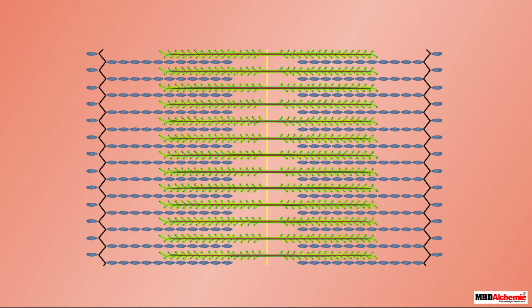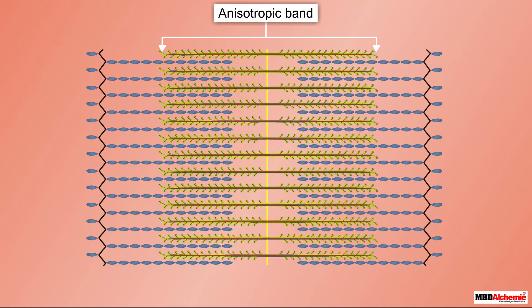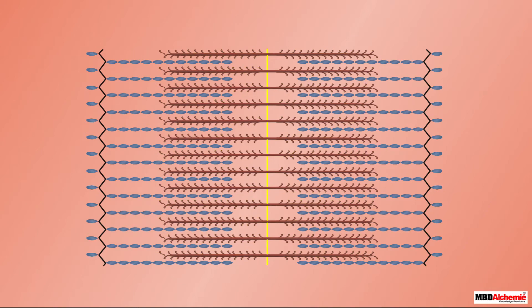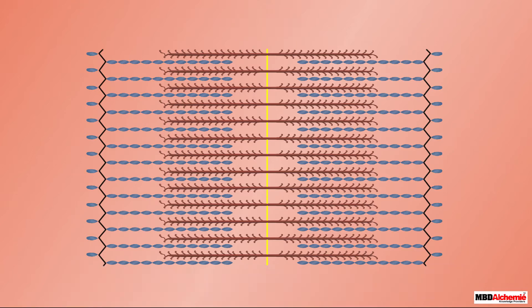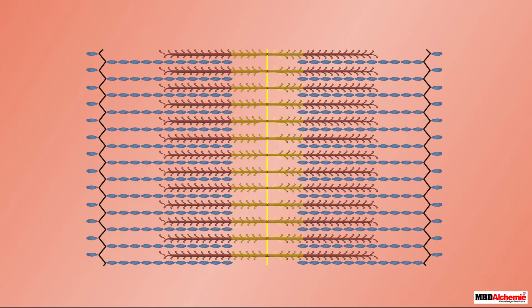The dark band contains myosin filaments and is called the anisotropic or A band. It has a comparatively less dark zone called the H zone in its middle. The H zone is less dark as it is not overlapped by the thin filaments. A thin fibrous membrane termed the M line is present in the center of the H zone, which holds together the thick or myosin filaments of the A band.